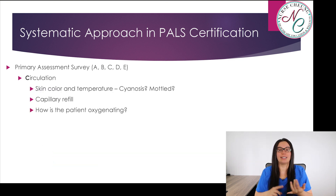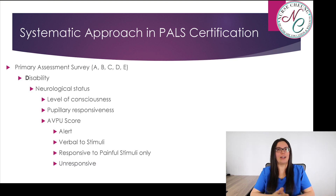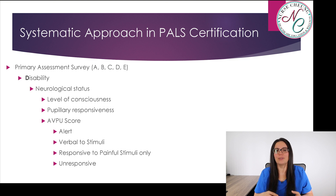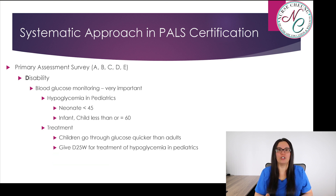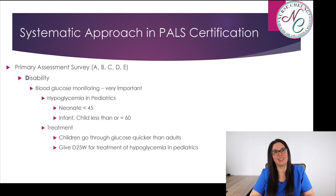In circulation, we also want to look at skin color and temperature — is the child cyanotic, is there mottling present, capillary refill, and how is the patient oxygenating? Moving on to D in our primary assessment survey — disability. We're looking at neurological status: level of consciousness and pupillary responses. We're going to use the AVPU score — is the child alert, verbal to stimuli, responsive to only painful stimuli, or unresponsive? We also want blood glucose monitoring. Hypoglycemia in pediatrics for the neonate is less than 45, and for an infant or child is less than 60. Children go through glucose much quicker than adults, so we want to give D25W for treatment of hypoglycemia in pediatric patients.